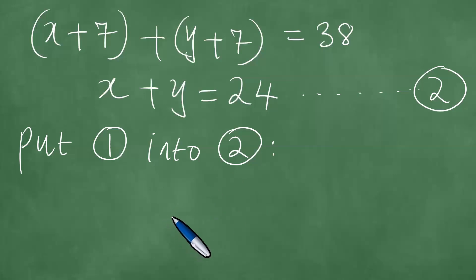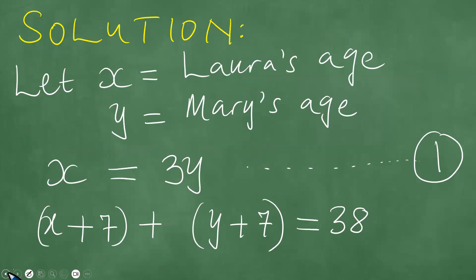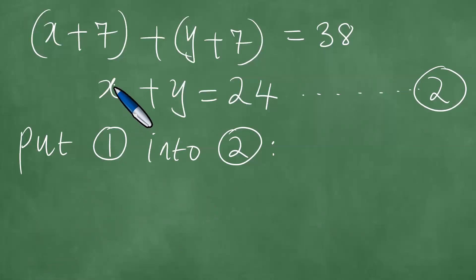So what we then do here is we put one into two. We put one into two, and if we do that, one is x equals 3y. So wherever there is x, we put 3y. So we're going to have 3y plus y equals 24. And if you add these two, you get 4y equals 24.